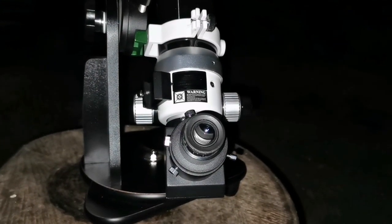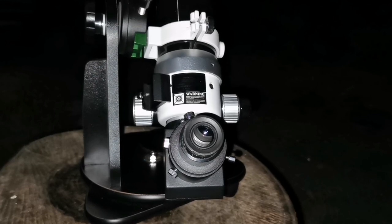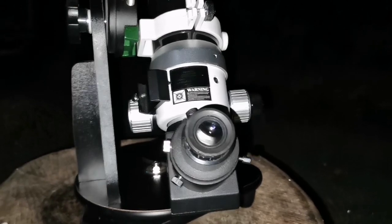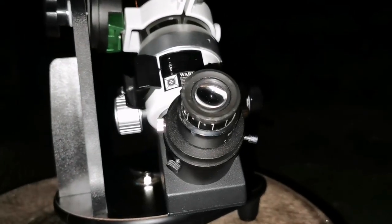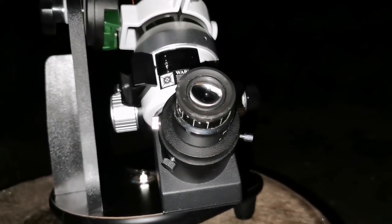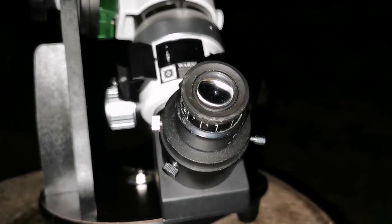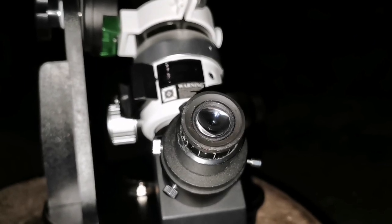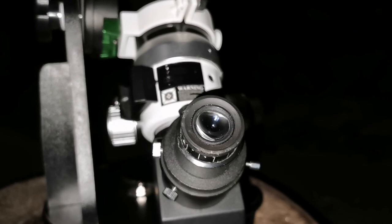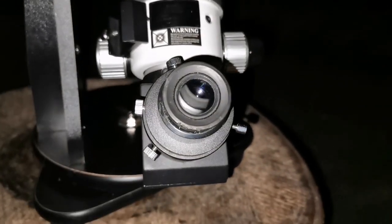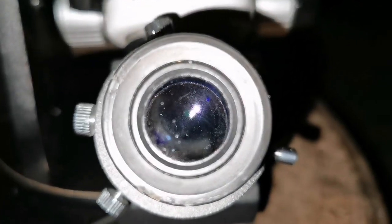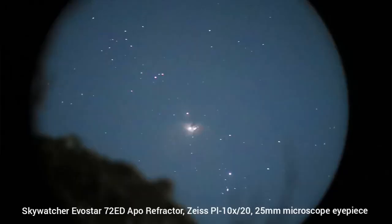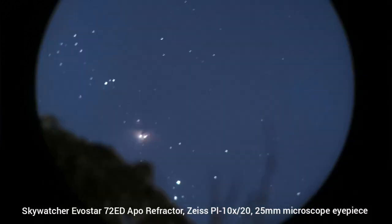This is the Skywatcher ED-72 Apochromatic Telescope that I'm using and this is the Zeiss 25mm 57 degrees eyepiece. This is the Zeiss PL 10x20. Let's see how is the view to this telescope. I will take an astrophoto like this.